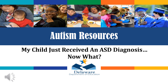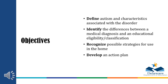Greetings and welcome to this learning session. This session will cover what to do now that your child has received an ASD or autism spectrum disorder diagnosis. The objectives for this session are for the attendees to be able to define autism and characteristics associated with the disorder, identify the differences between a medical diagnosis and an educational eligibility or classification, recognize possible strategies for use in the home, and develop an action plan.